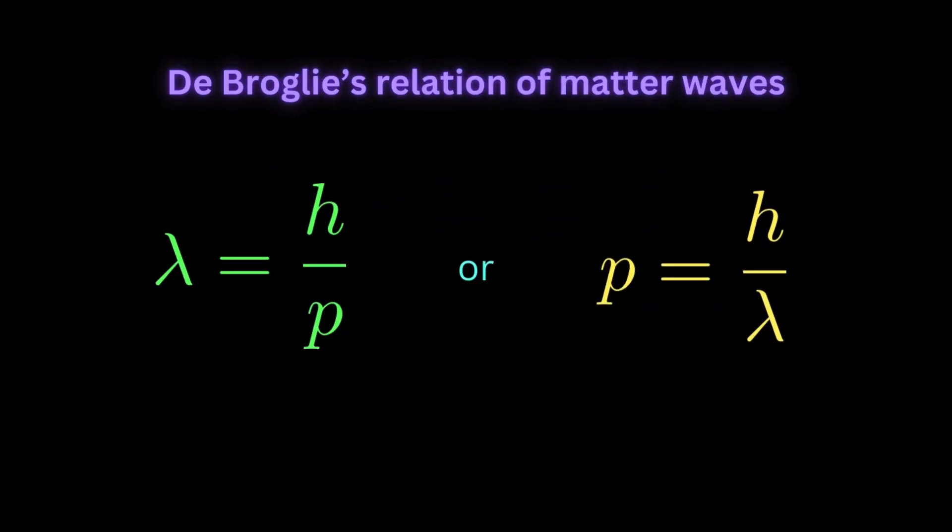De Broglie's famous relation is given in this form. It says that there exists a wave phenomenon associated with the particle. I have explained this in one previous video and represented it as De Broglie saw it, if you want to watch it. The wavelength of the particle depends on the momentum of the particle. The faster a particle or the larger its mass, the smaller its wavelength, and vice versa.